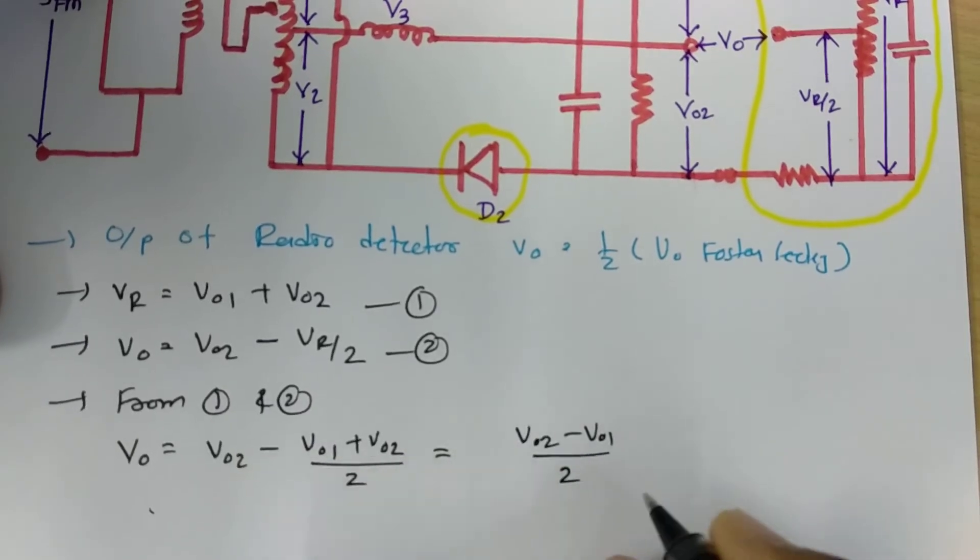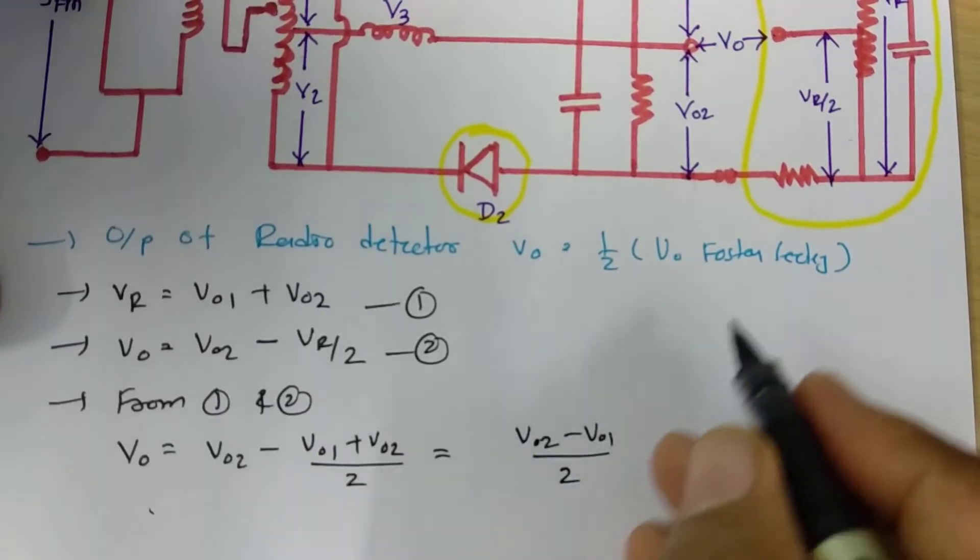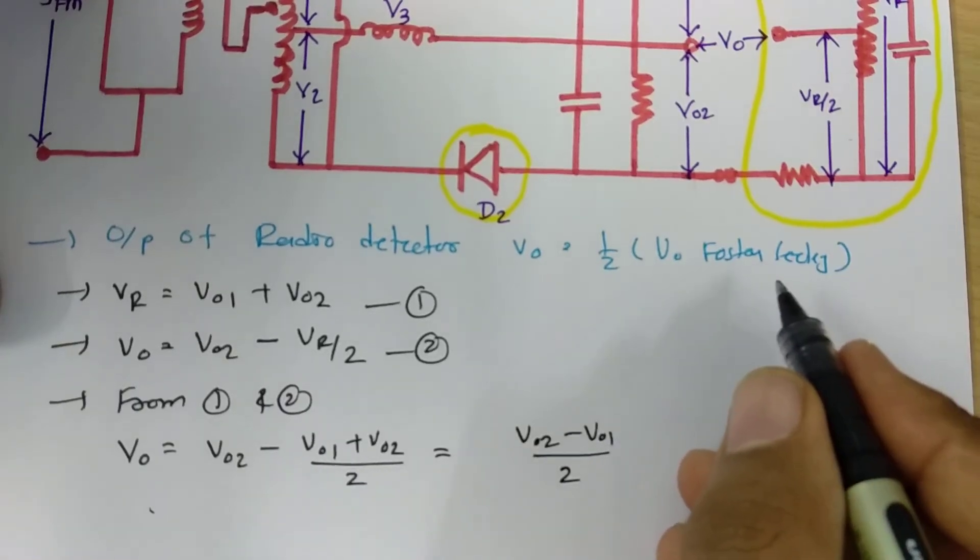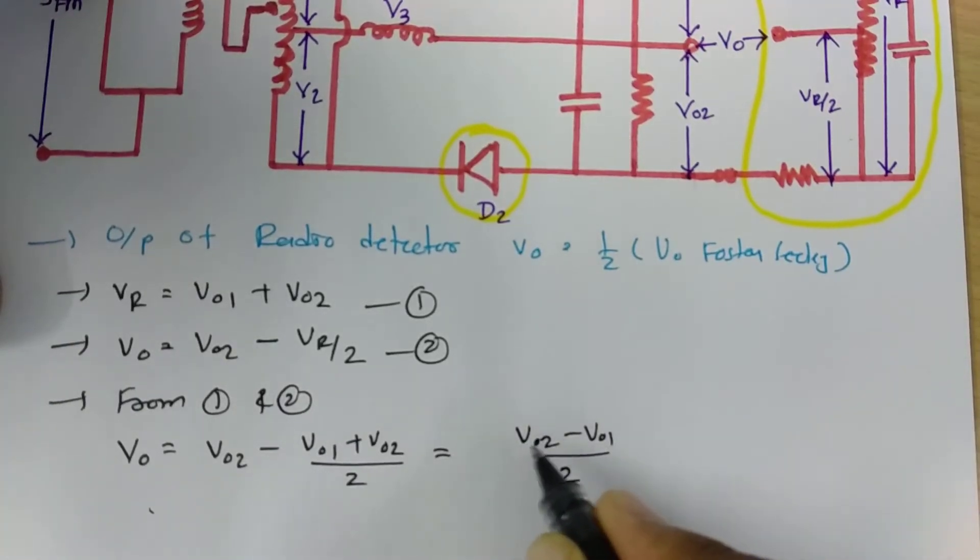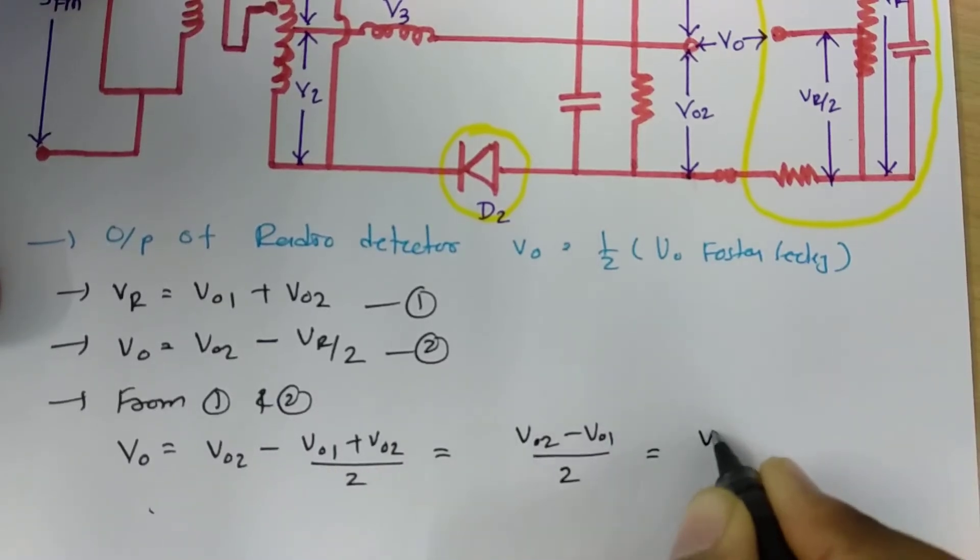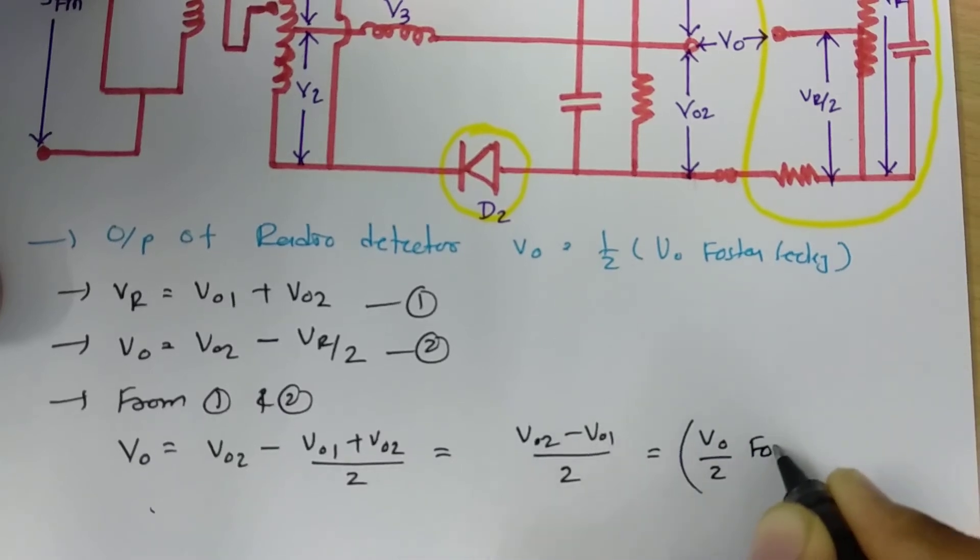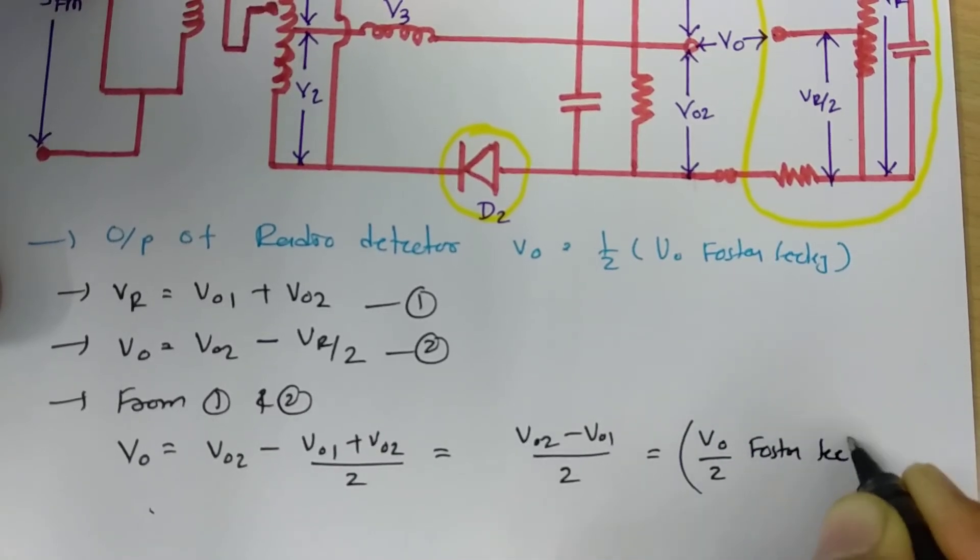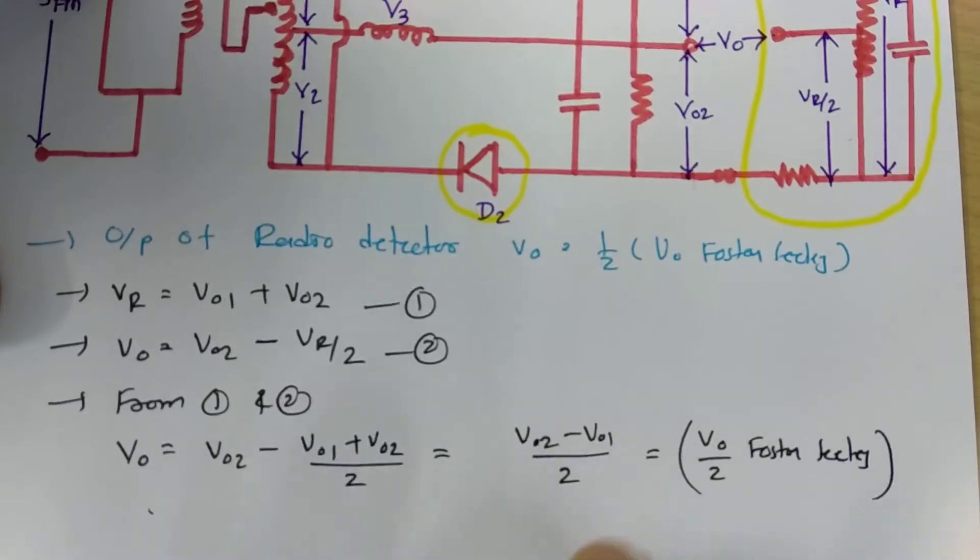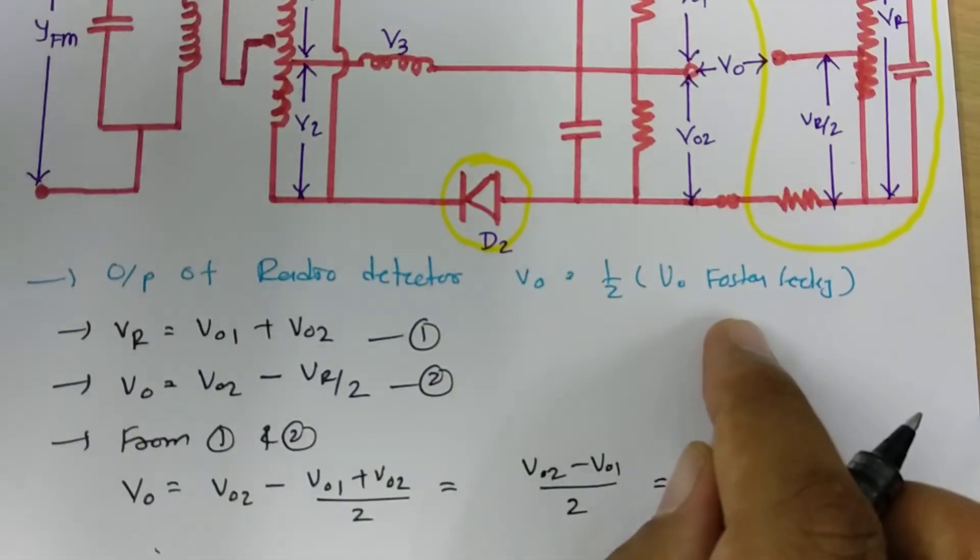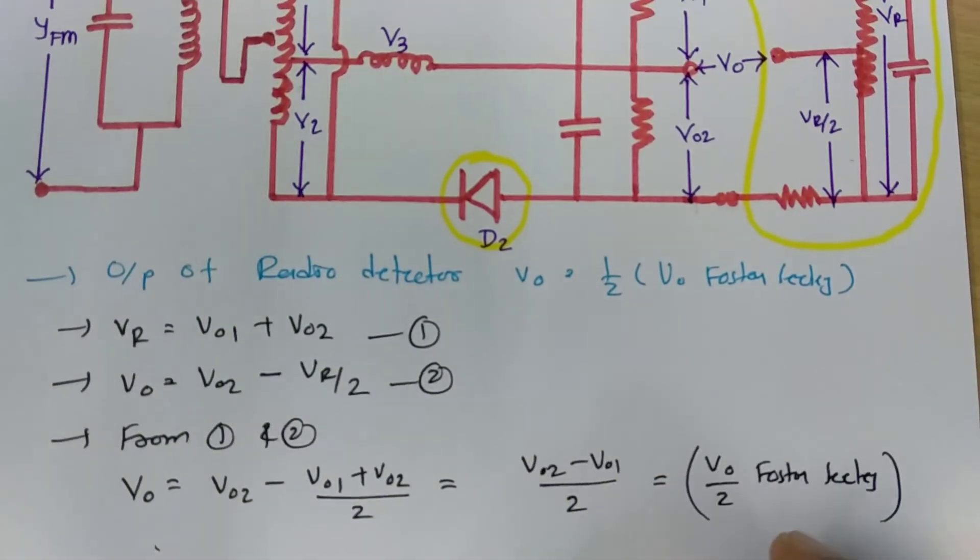So that will result into V02 minus V01 by 2. So if you see my previous session where I have explained Foster-Cilley where output was V02 minus V01, but over here it is V02 minus V01 by 2. So that is how output is half compared to Foster-Cilley. So this is what one disadvantage which is there with radio detector with respect to Foster-Cilley.